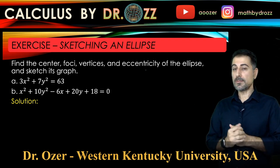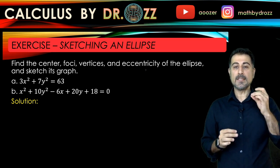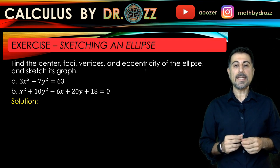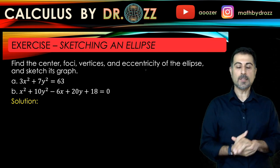In A and B, as you see, you're given two different equations. And our task is to find the center, foci, vertices, and eccentricity of the ellipse first, and then sketch the graph of that.